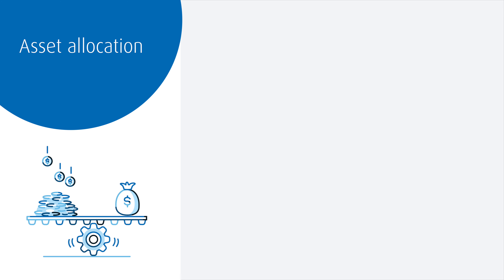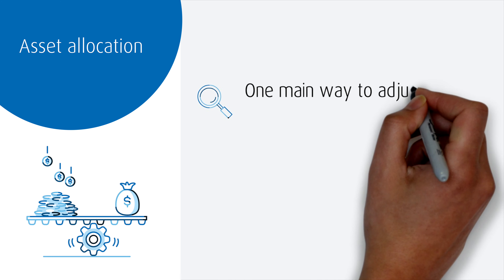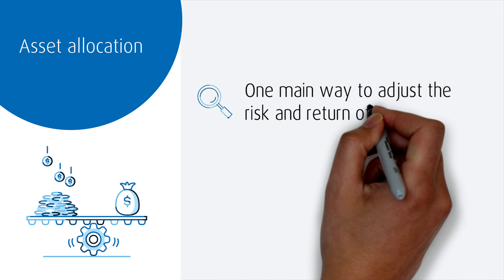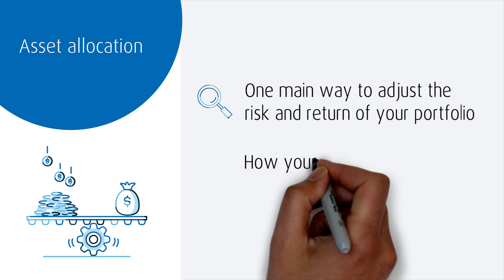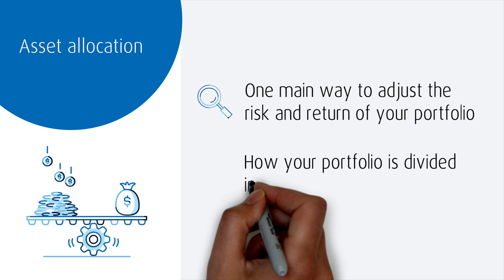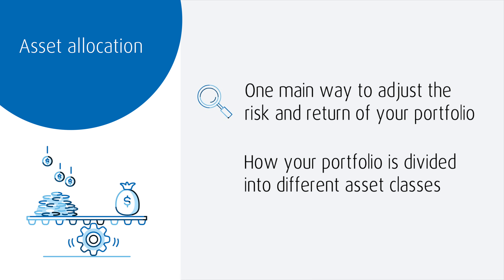Asset allocation is a very important concept. It's one main way to adjust the risk and return characteristics of your portfolio. Very simply, asset allocation describes how all of your money in your portfolio is divided into various different asset classes.